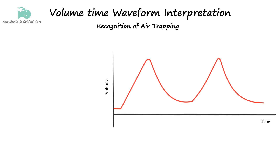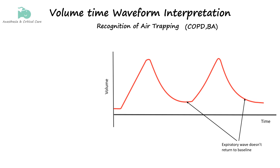Air trapping occurs when a person cannot fully exhale the air from their lungs before the next breath begins. This situation is common in conditions like COPD or asthma, where airway obstruction slows down exhalation. On a volume-time curve, this incomplete exhalation causes the curve to not return to baseline before the next breath starts. The curve will often show a prolonged, flattened exhalation phase, indicating that air is still trapped in the lungs.